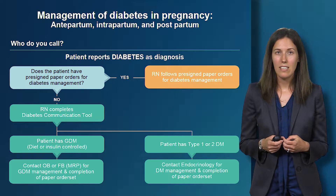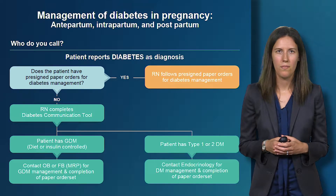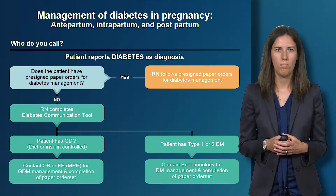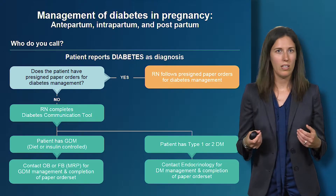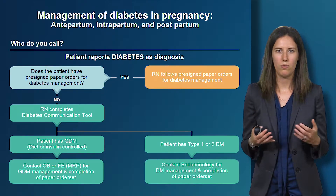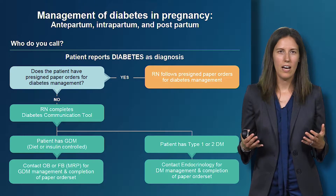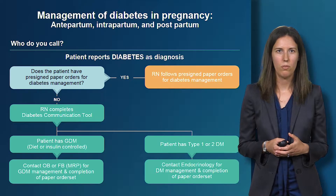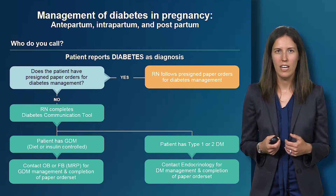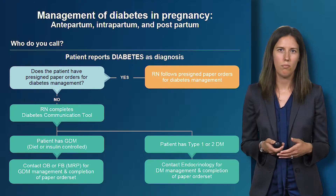If there is no pre-signed order set, the RN completes a diabetes communication tool, which can be found on the units. Based on this, the RN and patient can determine if the patient has gestational diabetes or type 1 or type 2 diabetes. If the patient has gestational diabetes — whether diet or insulin controlled — the RN contacts the most responsible physician team, either obstetrical or family medicine obstetrics, to initiate management and complete the order set. If the patient has type 1 or type 2 diabetes, the RN contacts endocrinology.